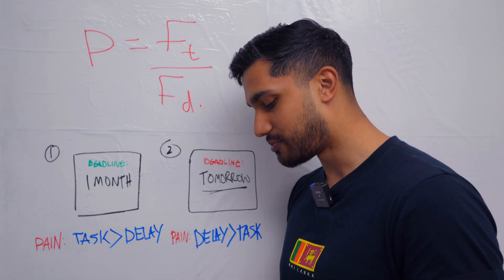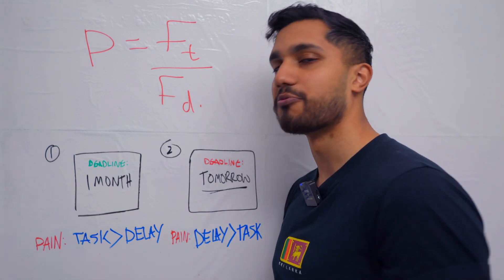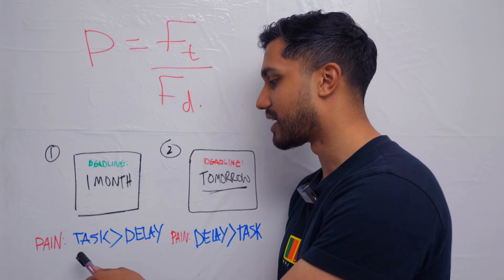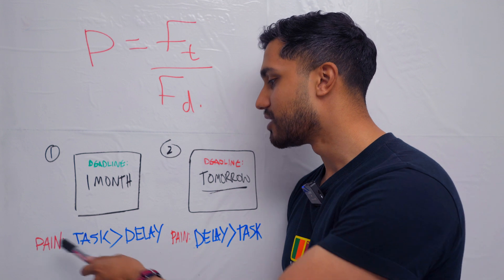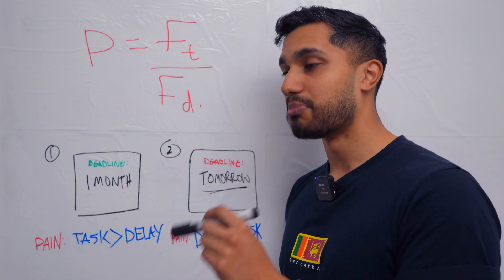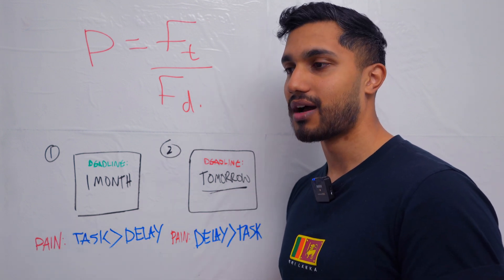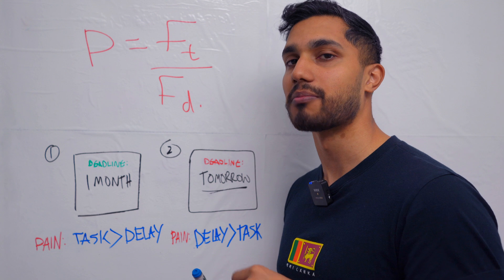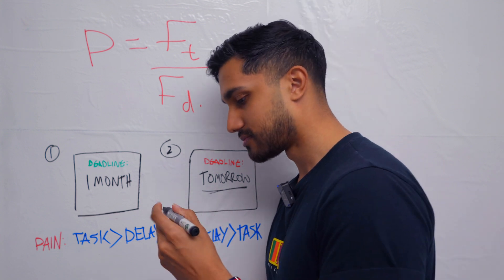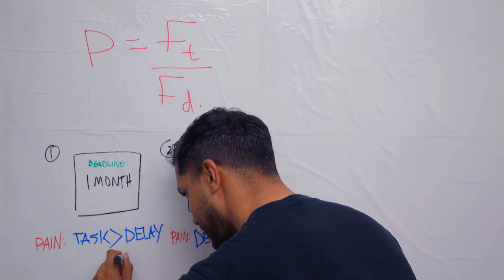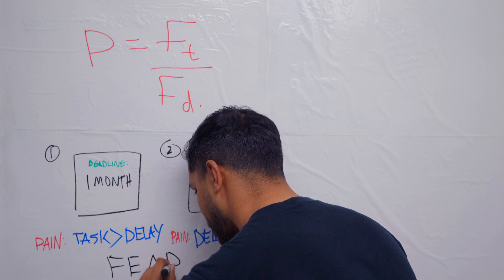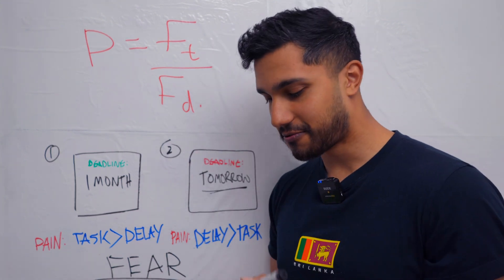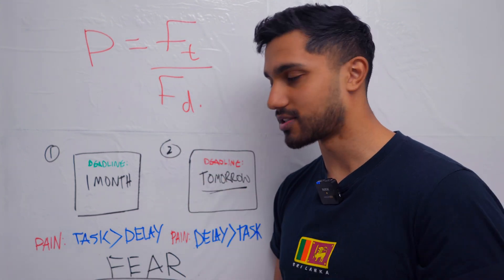And now I know that we've been talking about terms of pain, expected pain. If the expected pain of the task is lower than the expected pain of the delay, then you procrastinate. But what is another word for how you feel when you expect something to be painful? That is fear.